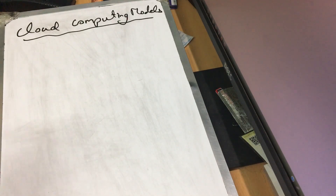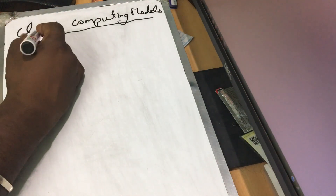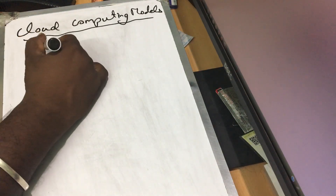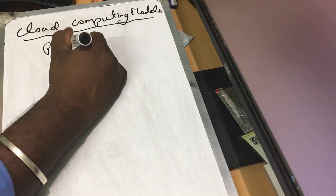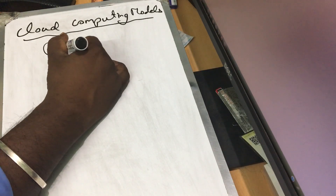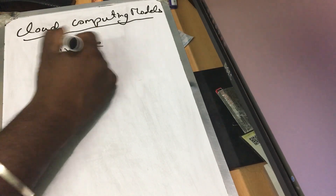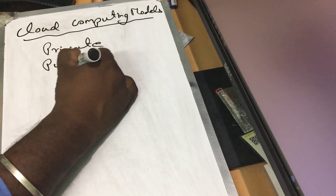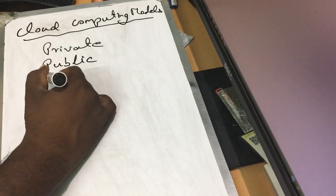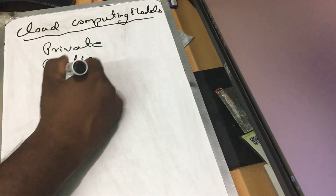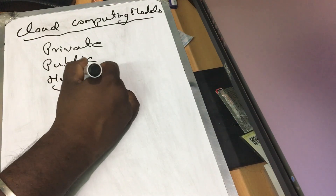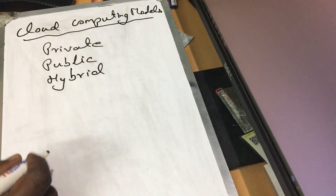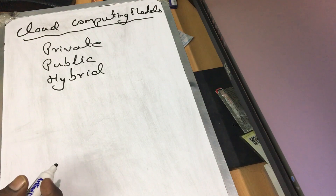Hi, in this video we will talk about cloud computing models. We have three types of cloud computing models: private cloud, public cloud, and hybrid cloud. So there are three types of cloud computing models.